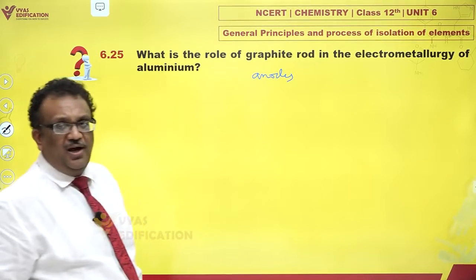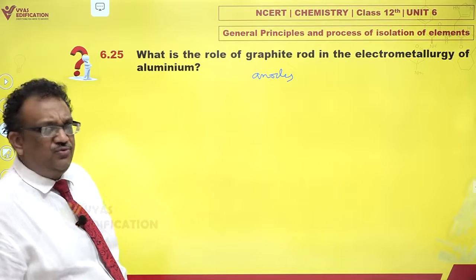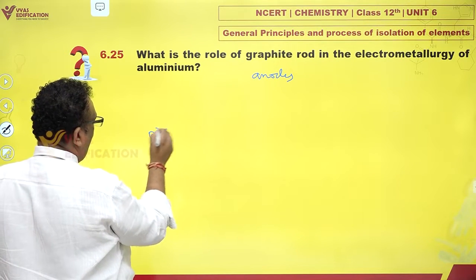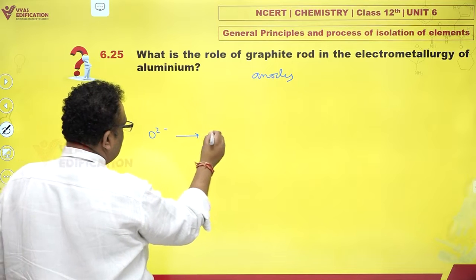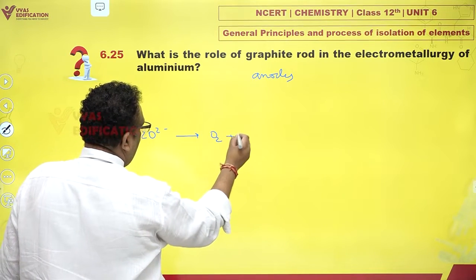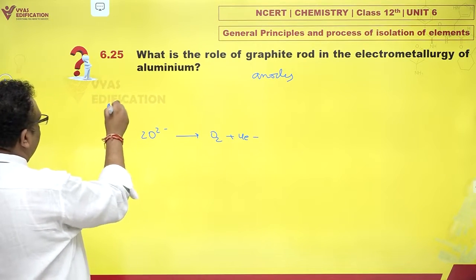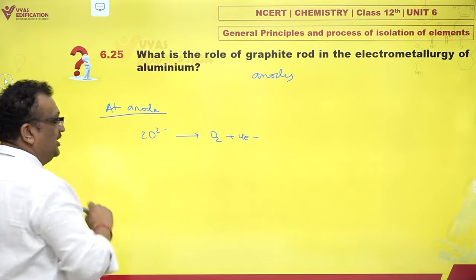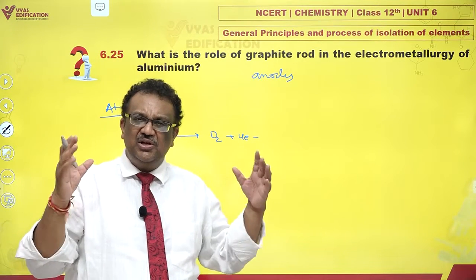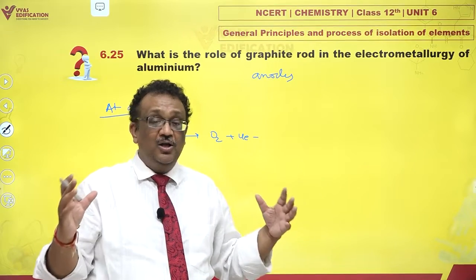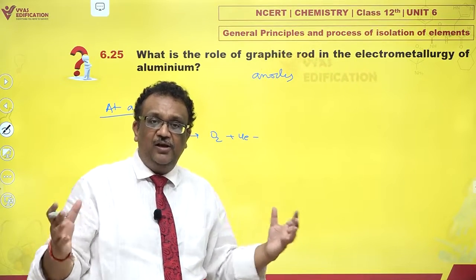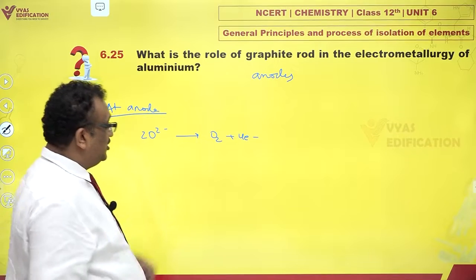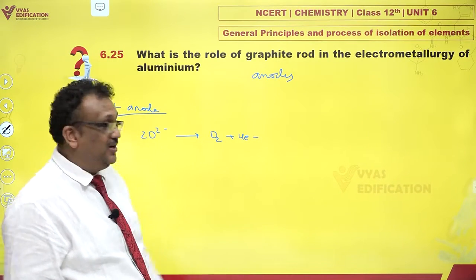Temperatures are really high, around 1200 degrees Celsius, and you find that oxide ions get liberated at the anode. Imagine a temperature of 1000 degrees Celsius — that is really hot. You have graphite, red hot like coals, and it is the source where oxygen is being generated.